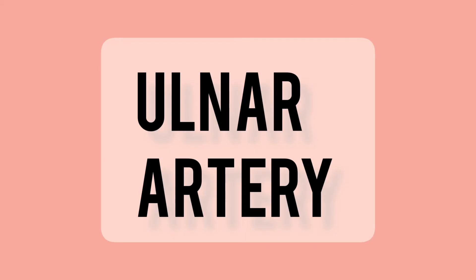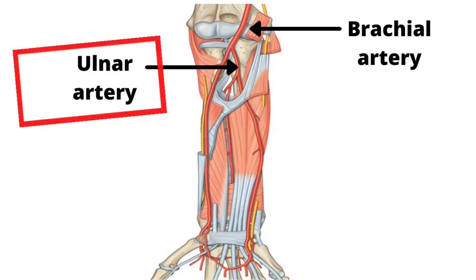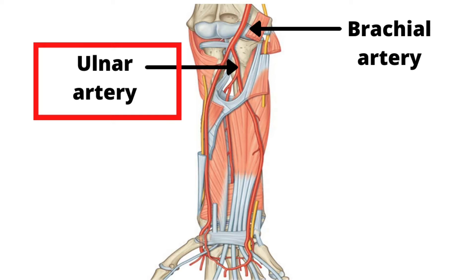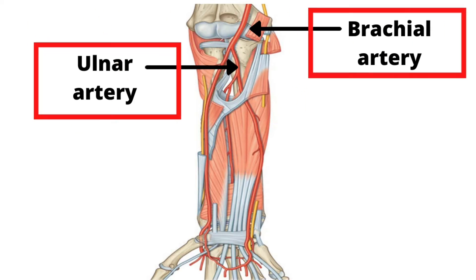The ulnar artery is a larger terminal branch of the brachial artery and begins in the cubital fossa. There are separate videos for the brachial artery and the cubital fossa — if you wish to watch them, check out the links provided in the description box.